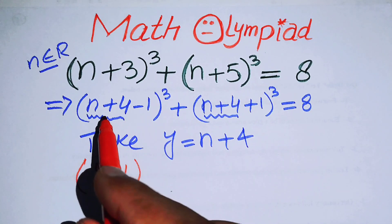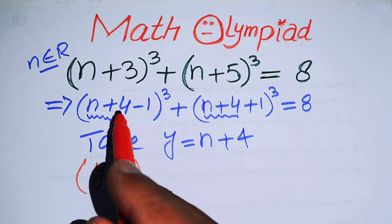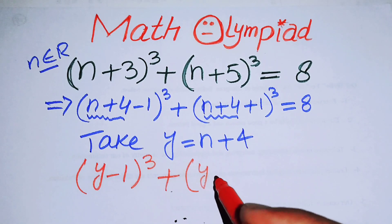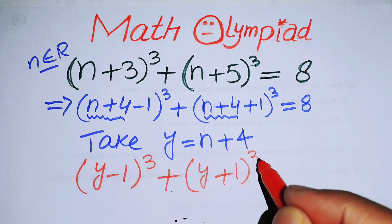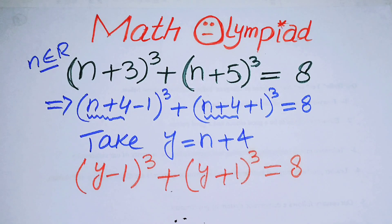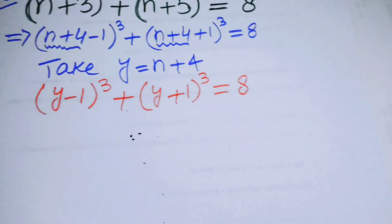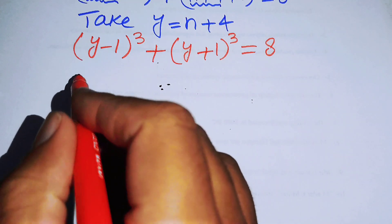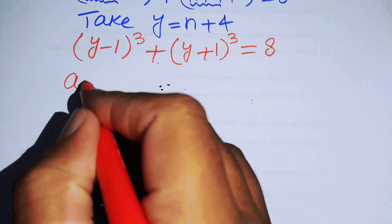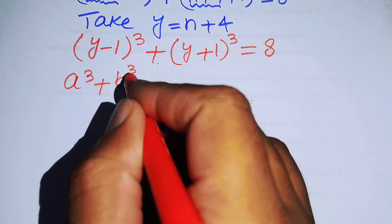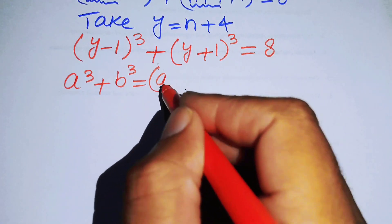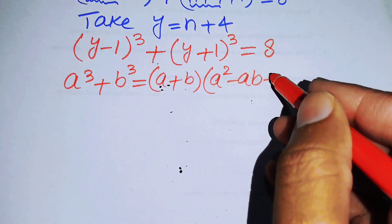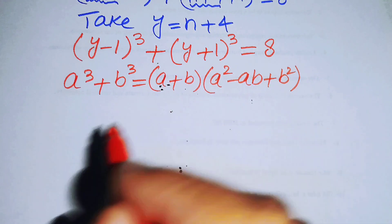When you substitute y = n+4, the equation becomes (y−1)³ + (y+1)³ = 8. In the next step we will use the cubic sum formula: a³ + b³ = (a+b)(a²− ab + b²).